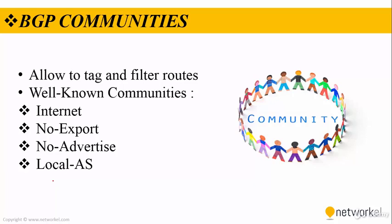There are four well-known community features: Internet, No Export, No Advertise, and Local-AS. Internet promotes the relevant route to the Internet and other related routes. No Export does not send the relevant routes to eBGP neighbors. No Advertise does not send the relevant routes to any neighbors. And Local-AS does not send the relevant routes outside the Local-AS.